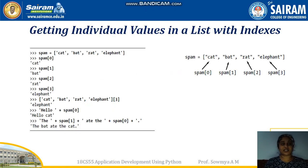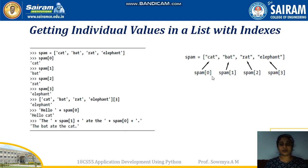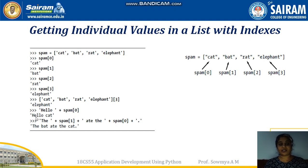To get individual values in the list we use indexing, similar to arrays in previous programming languages. If spam contains ['cat', 'bat', 'rat', 'elephant'], the first value is at index zero and can be fetched with spam[0]. Typing spam[0] in the IDLE shell prints the value at the zeroth index. If you use string concatenation with plus, make sure the index used holds a string value so it can be concatenated with another string.